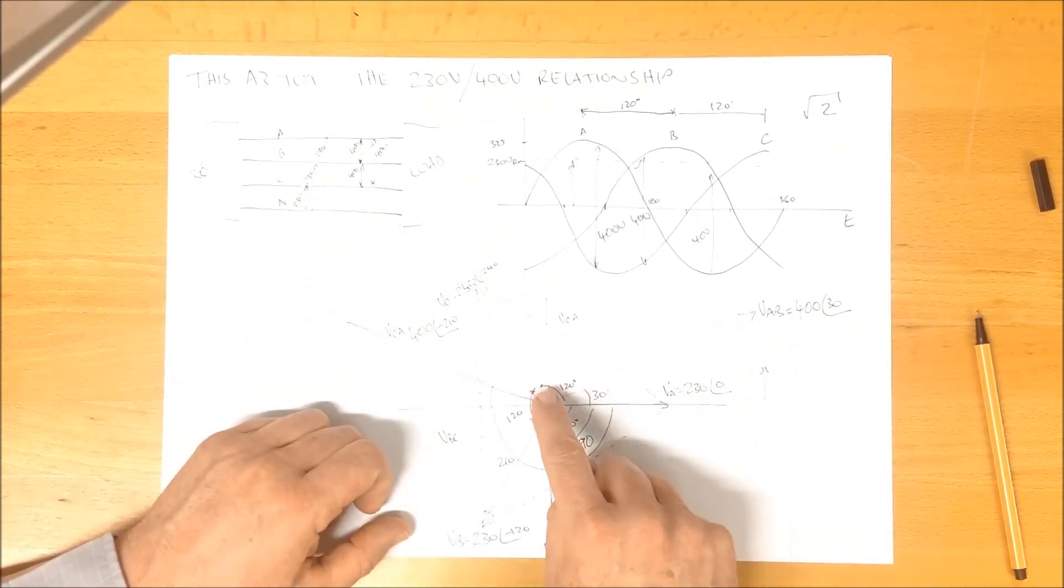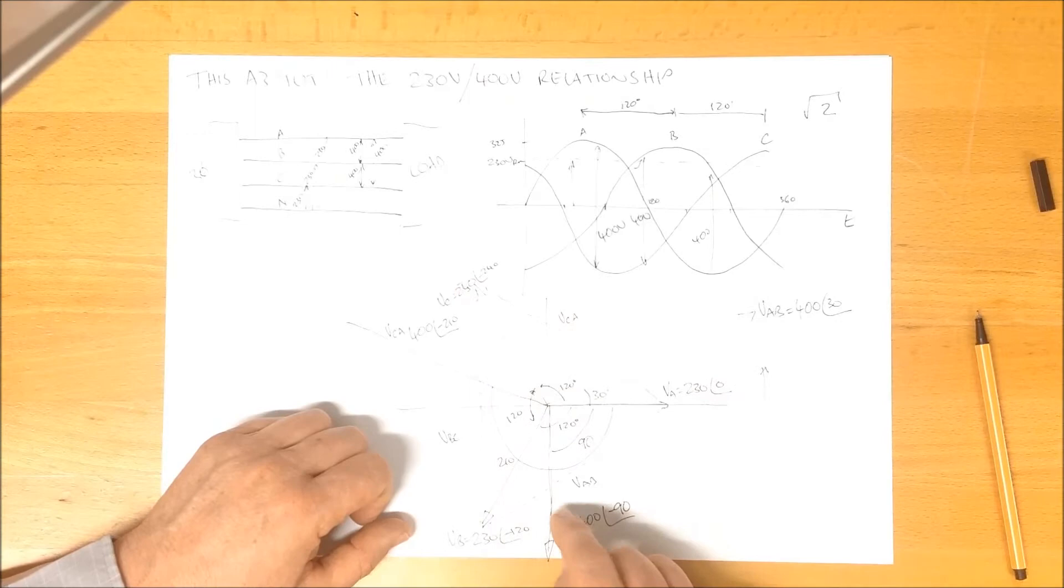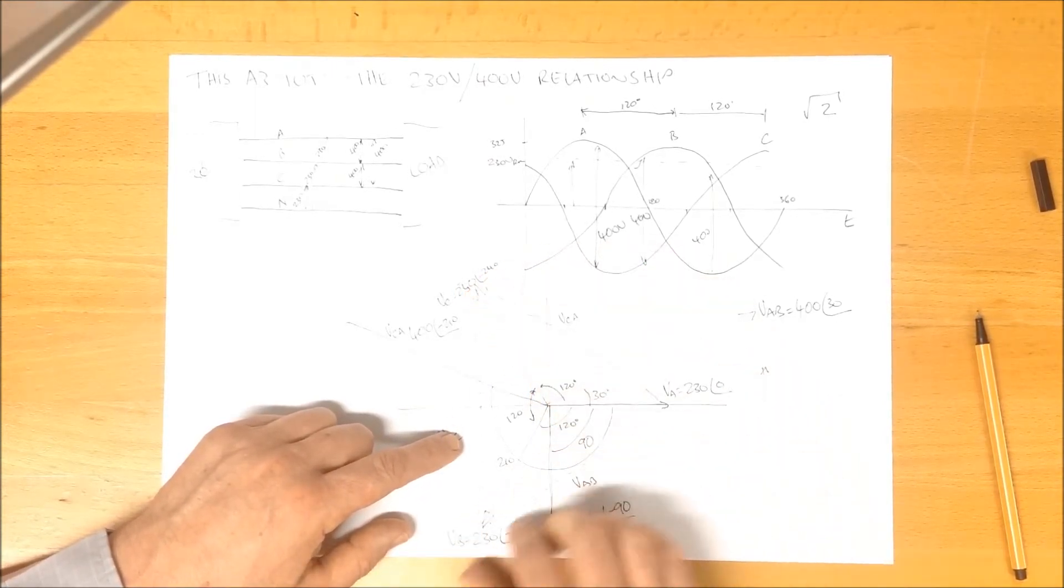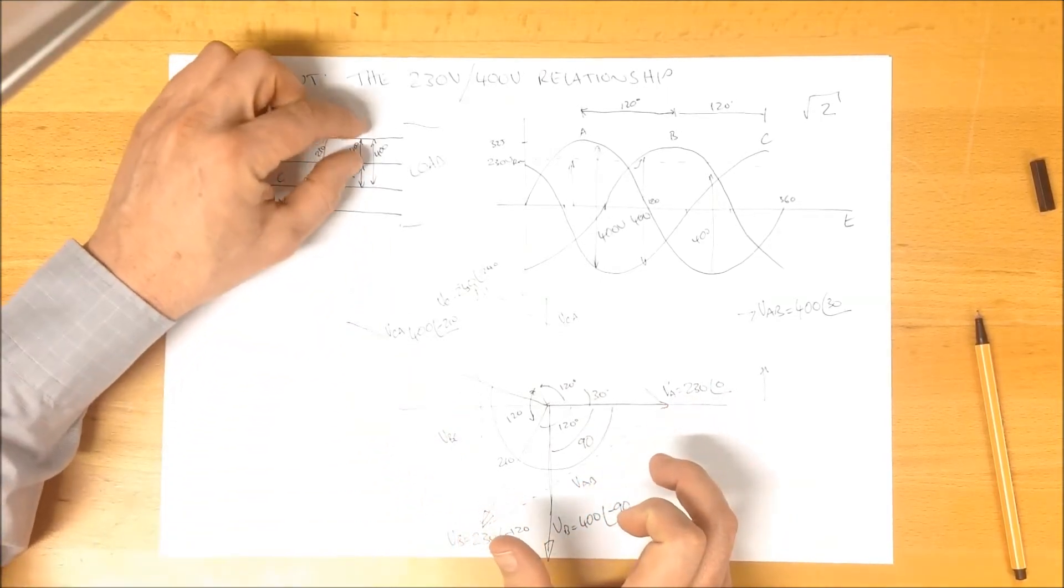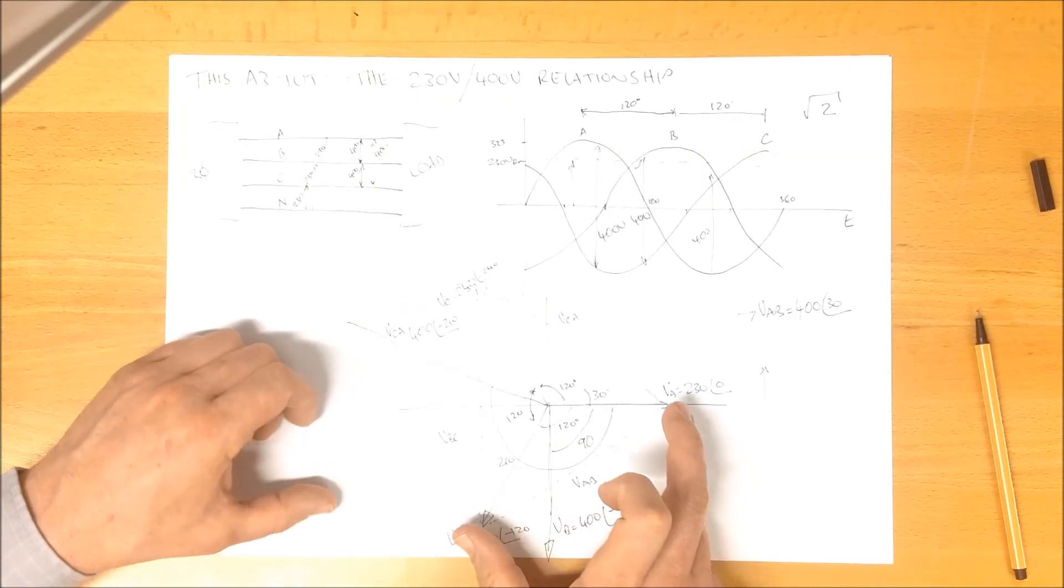We've got our phase voltages, which everyone knows about, our 230 at zero, 230 at minus 120, and 230 at minus 240. And then we've measured between those two, just as we would up here, between here, and we see there are 400. We reference that to our origin.